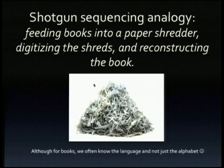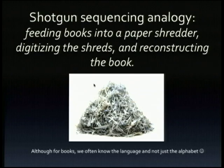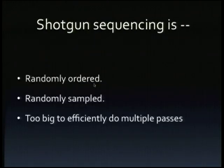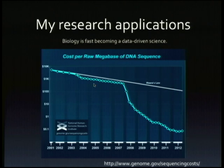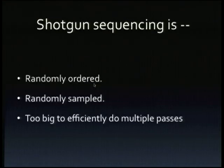I work on shotgun sequencing, which is essentially the process of feeding DNA into a paper shredder, digitizing the shreds that come out, and then trying to reconstruct the original sequence from that digital data. There are a couple of cool things about shotgun sequencing: it's randomly ordered, it's randomly sampled, and it's getting too big to efficiently do multiple passes. By 'too big' I mean any computer you bought three years ago can no longer handle it — you have to buy a new one, and even then in a year you won't be able to handle it. So we need better algorithms.